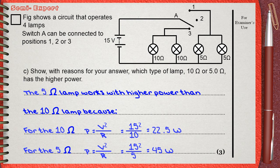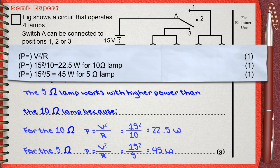Let's see the mark scheme. This is a 3 mark question. The use of power equals V square over R, this is for 1 mark. The calculations related to the 10 ohm lamp is another mark. And the same calculations for the 5 ohm lamps is the 3rd mark.